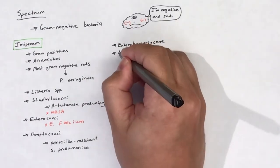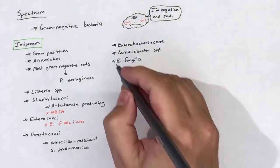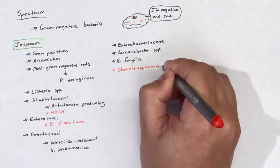Imipenem also has excellent activity against Enterobacteriaceae, Acinetobacter species, and B. fragilis.